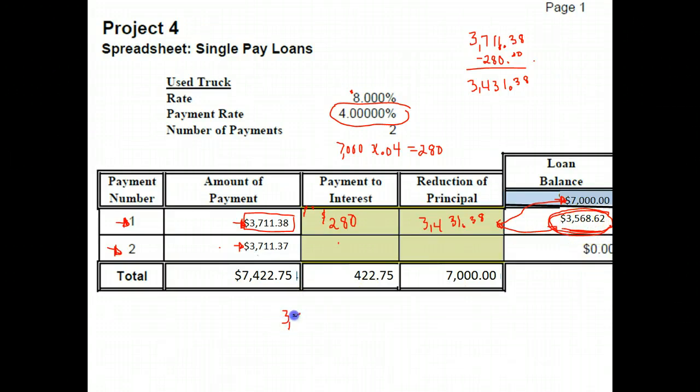To find our amount of interest, we take that amount that was left owed on the loan times our rate of .04. When we do that, we get $142.74. So here we have $142.74. Actually, $142.75 if I round up.